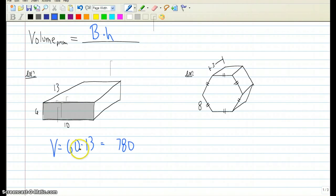Now 60 would be the area, so that would be units squared. 13 is just a linear measurement, so that's units. Units squared times units means we're dealing with units cubed when we have the volume.